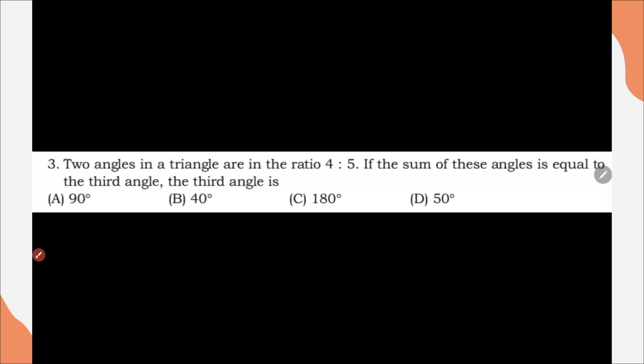Question number 3, two angles in a triangle are in ratio 4 is to 5. If the sum of this angle is equal to the third angle, the third angle is, correct option is option A, 90 degree. Question number 4, if 2 by 3 of a number is 20 less than original number, then the number is, correct option is option C, 60.